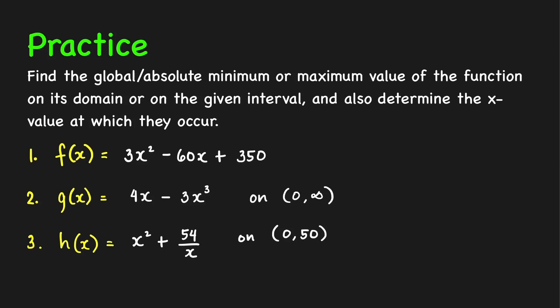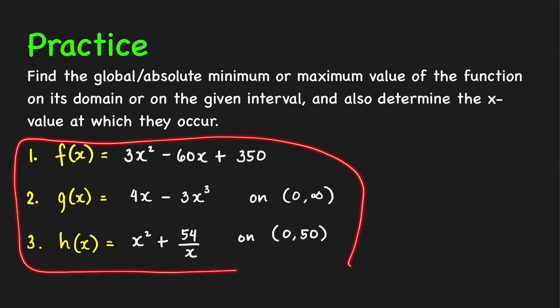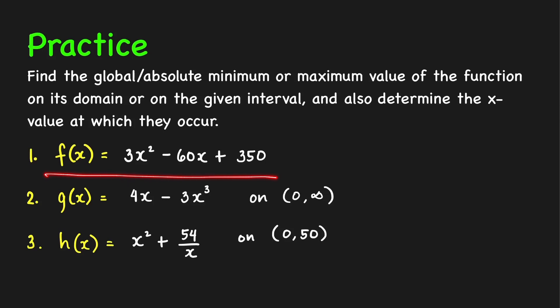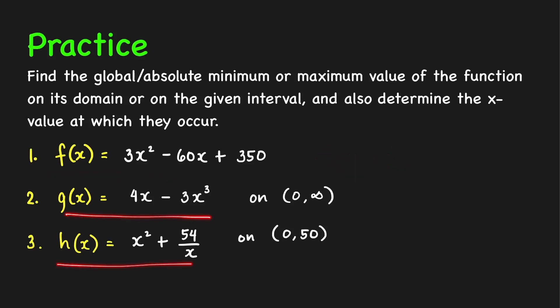Here are some practice problems. Find the global or absolute minimum or maximum value of the function on its domain or on the given interval. For the first function, find the absolute minimum or maximum on its domain, which is negative infinity to infinity. For the other two functions, find the absolute max or min on the given intervals. If you'd like me to check your answers, please write them in the comment section below.